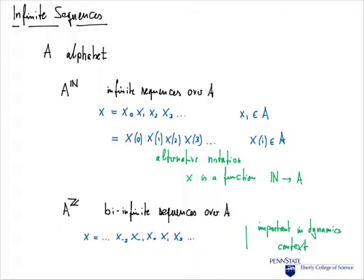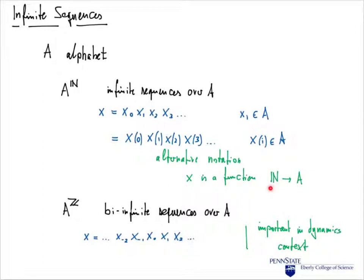Let's start with the concept of an infinite sequence. As usual, we use A to denote our alphabet, and A to the N denotes the set of all infinite sequences over A. Such an infinite sequence x looks like x_0, x_1, x_2, x_3, and so on, with the condition that each x_i is in A. We will sometimes use an alternative notation: x(0), x(1), x(2), x(3), and so on — using function values instead of subscripts. This points out that x is actually a function that maps the natural numbers to elements of A.